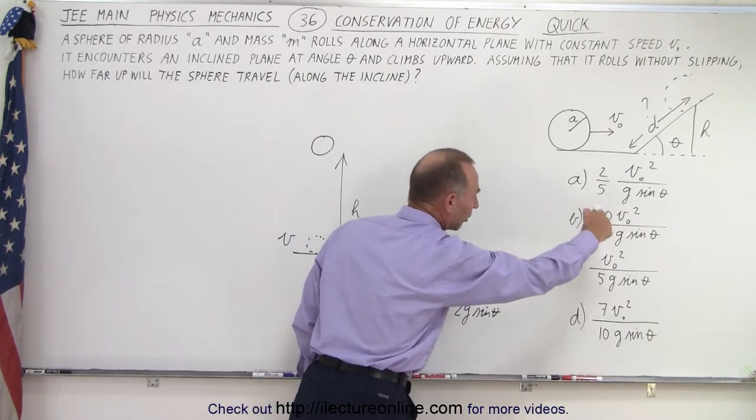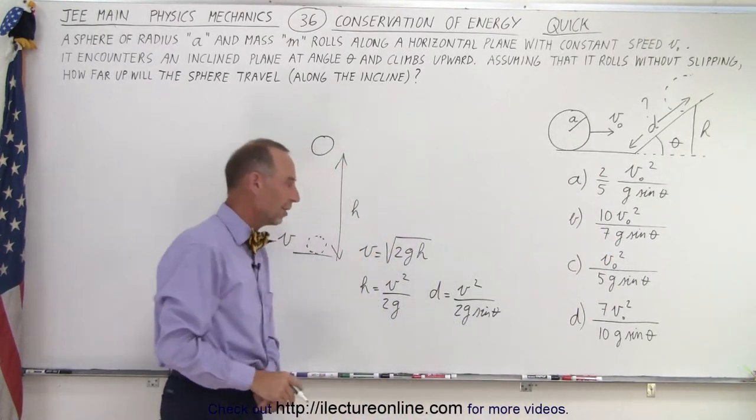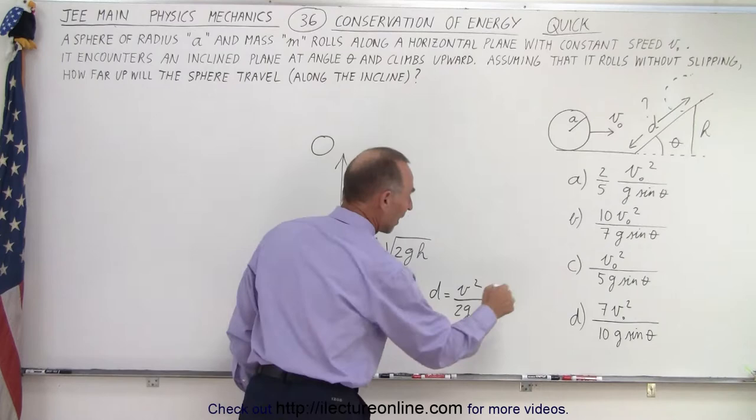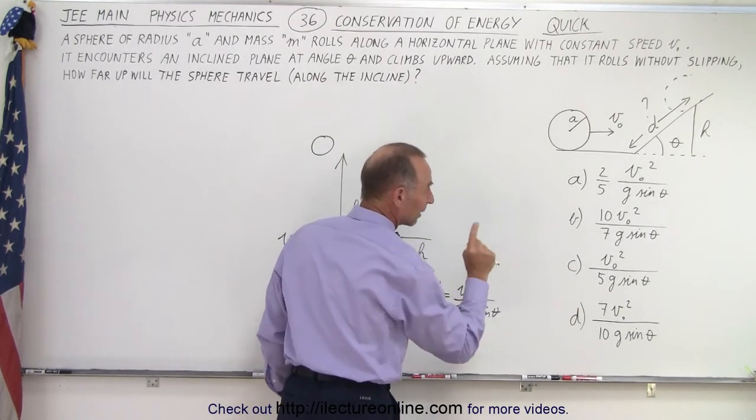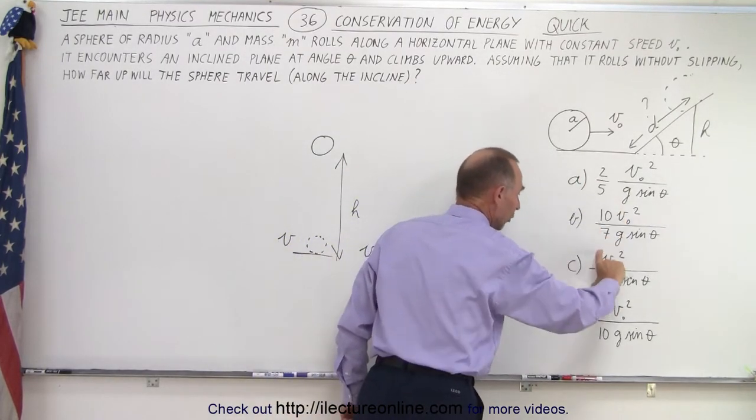That's why all these answers are 1 over g sine theta in the denominator. But notice we have v squares everywhere, g sine theta. The only thing that differs is the coefficient.